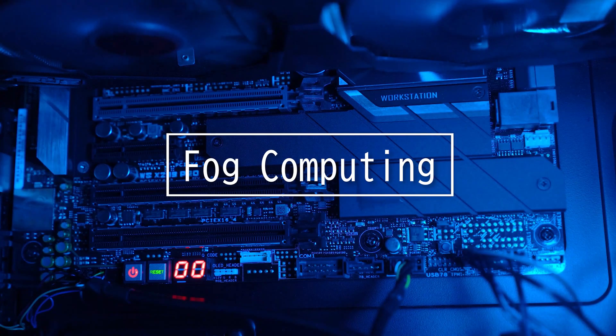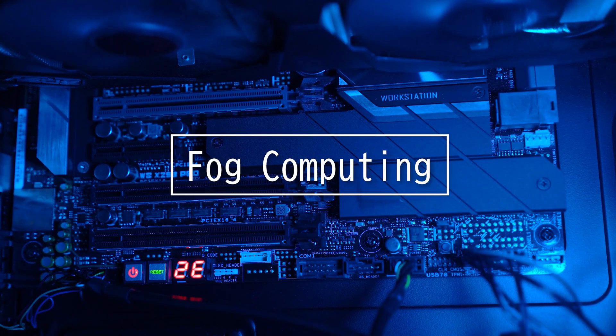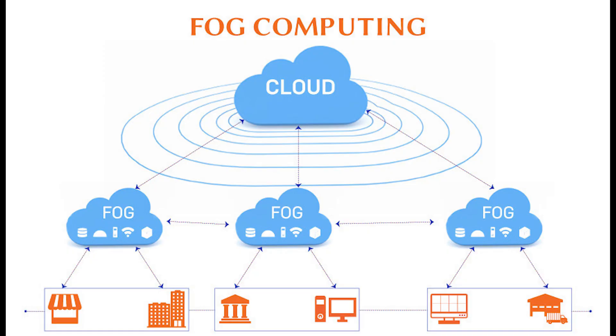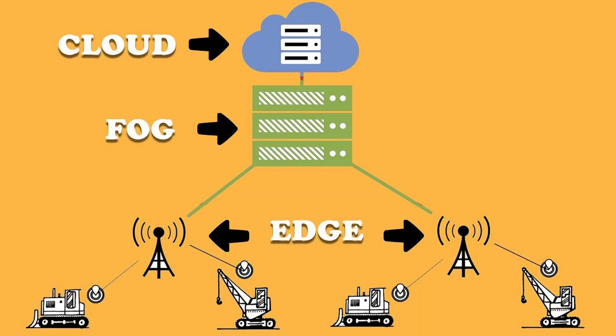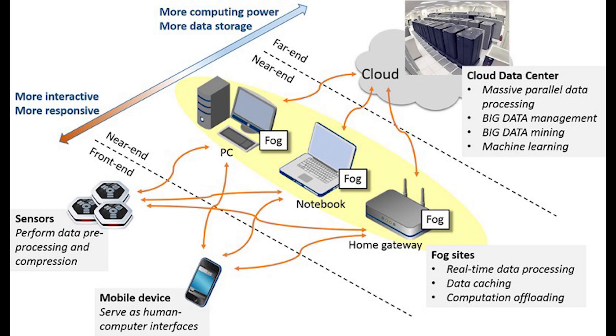This video is on fog computing. Fog computing is a term coined by Cisco that refers to extended cloud computing to an edge of the enterprise's network. Many people use the terms fog computing and edge computing interchangeably because both involve bringing intelligence and processing closer to where the data is created. Fog computing is basically a decentralized computing infrastructure.